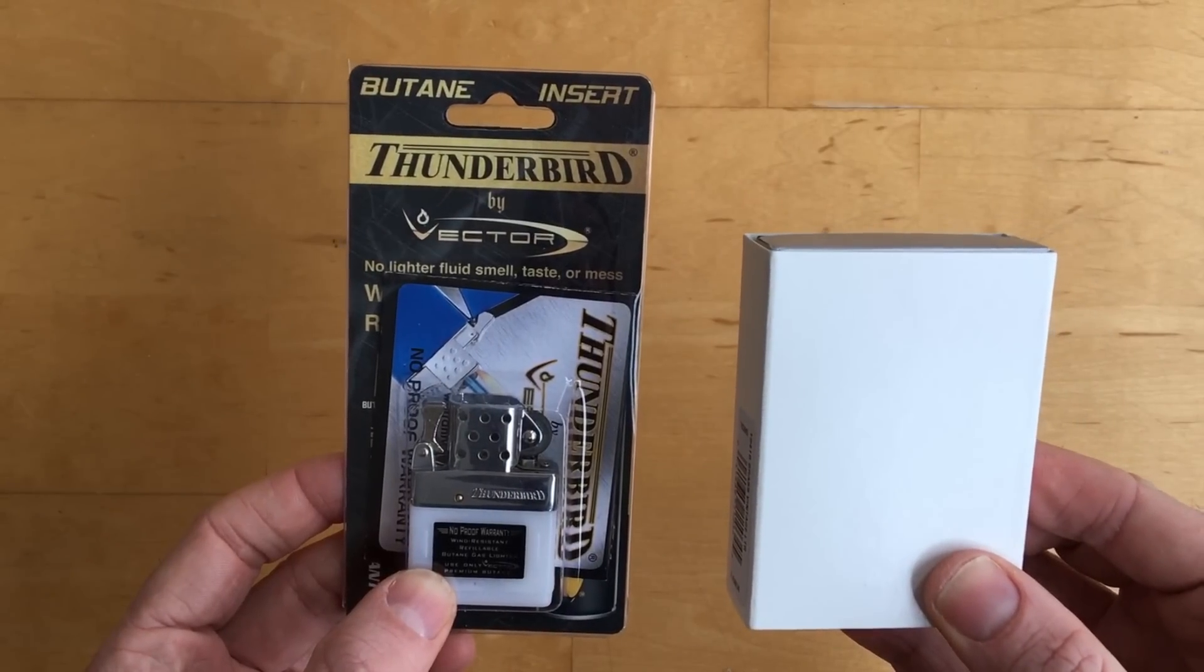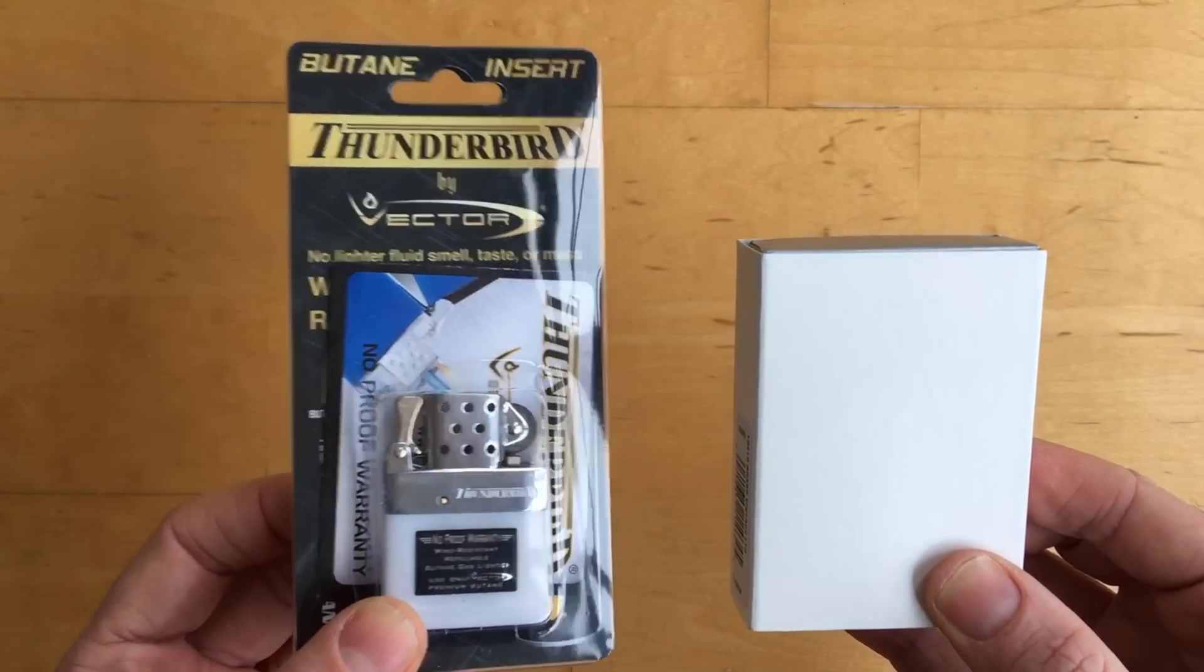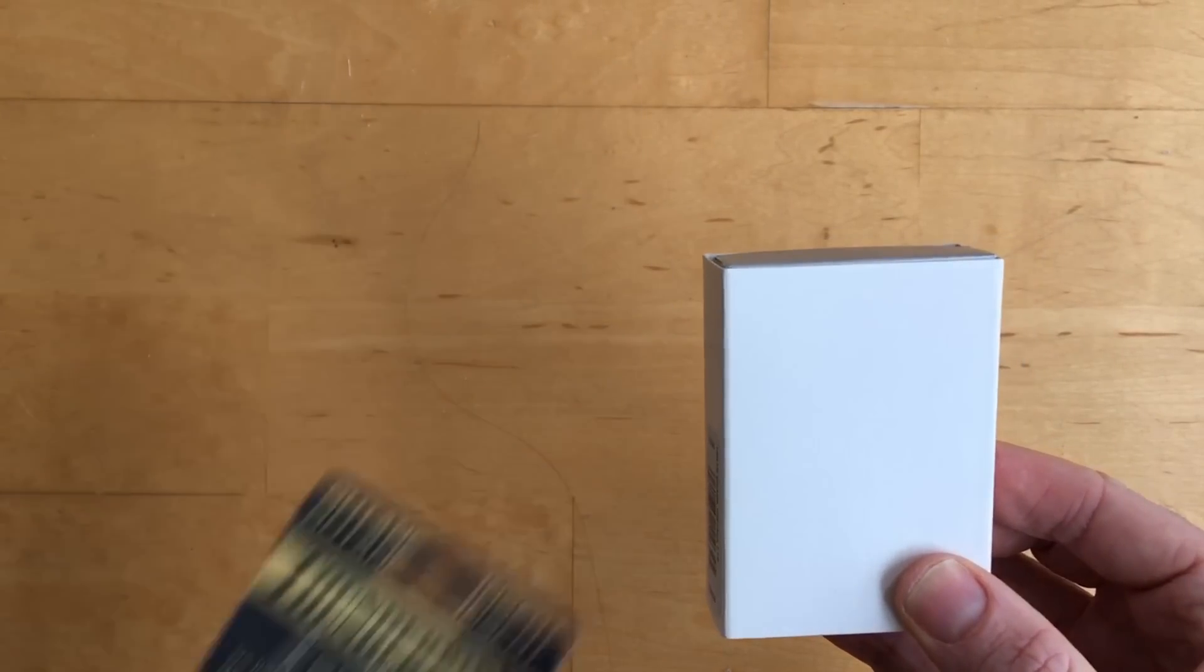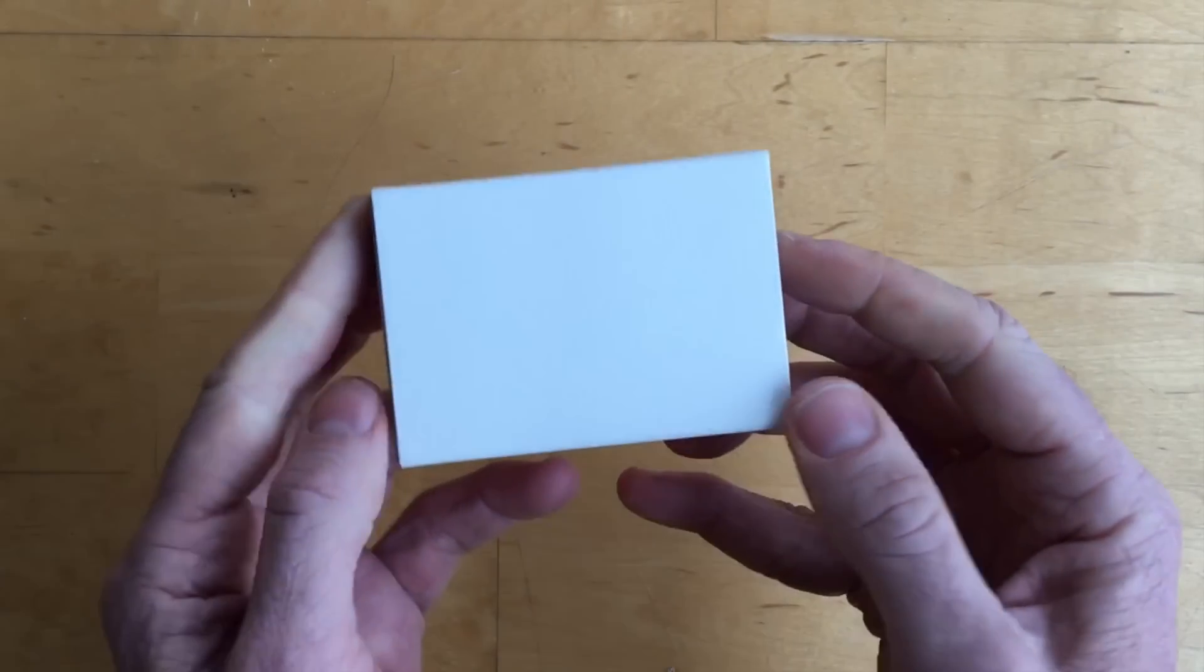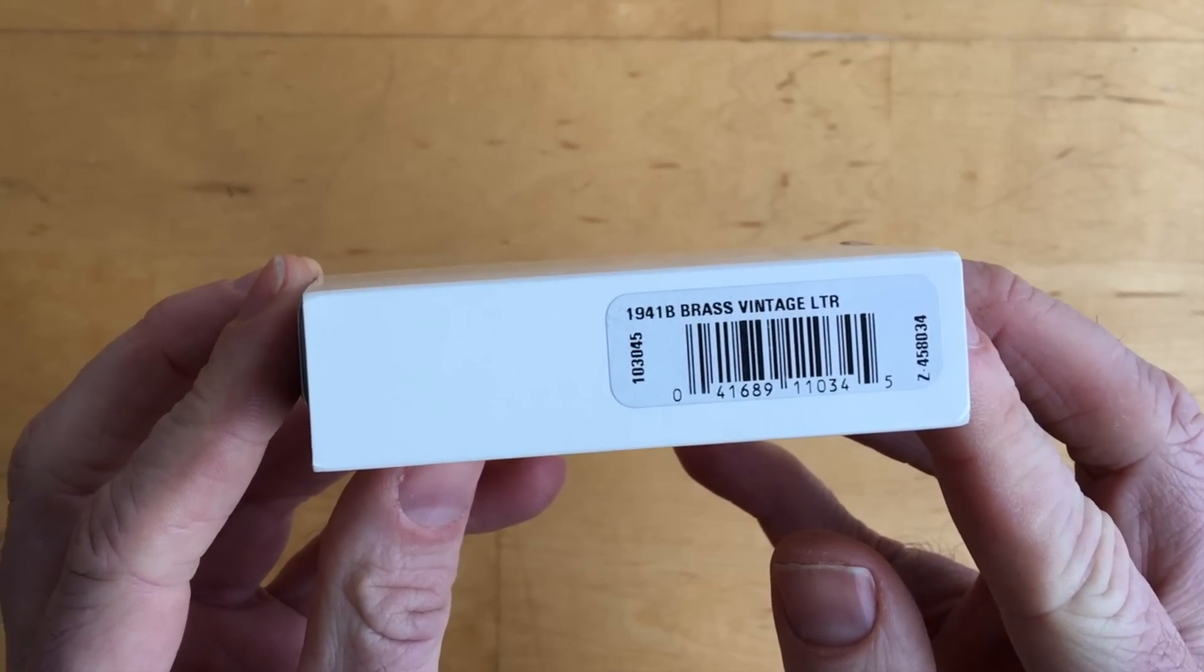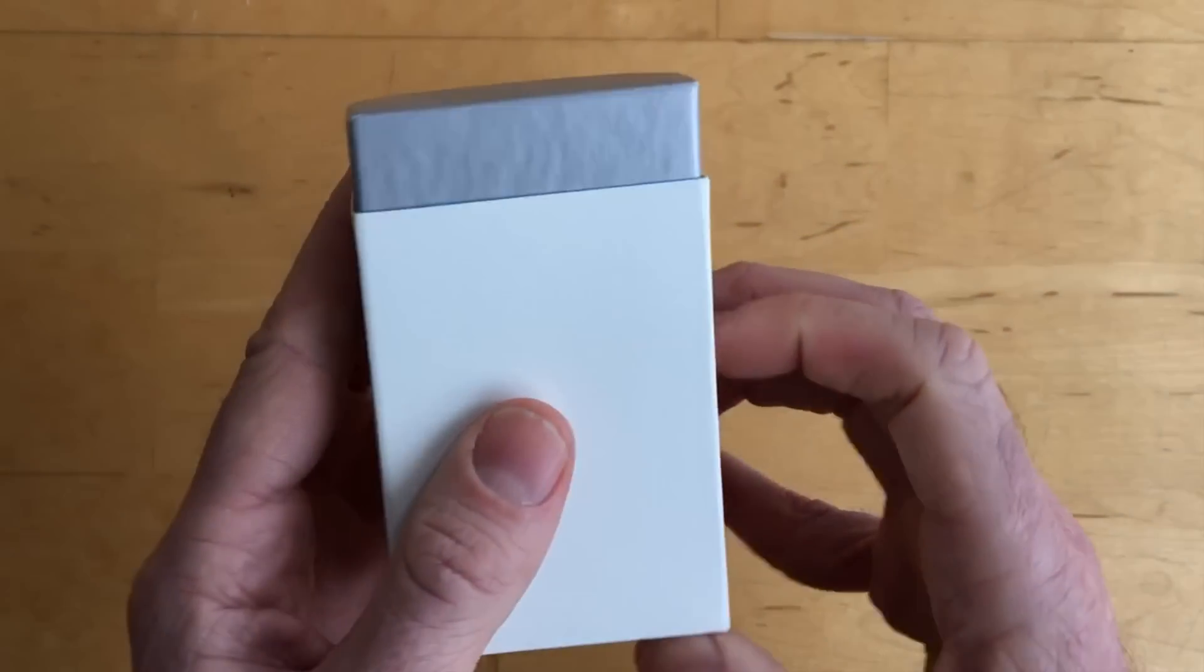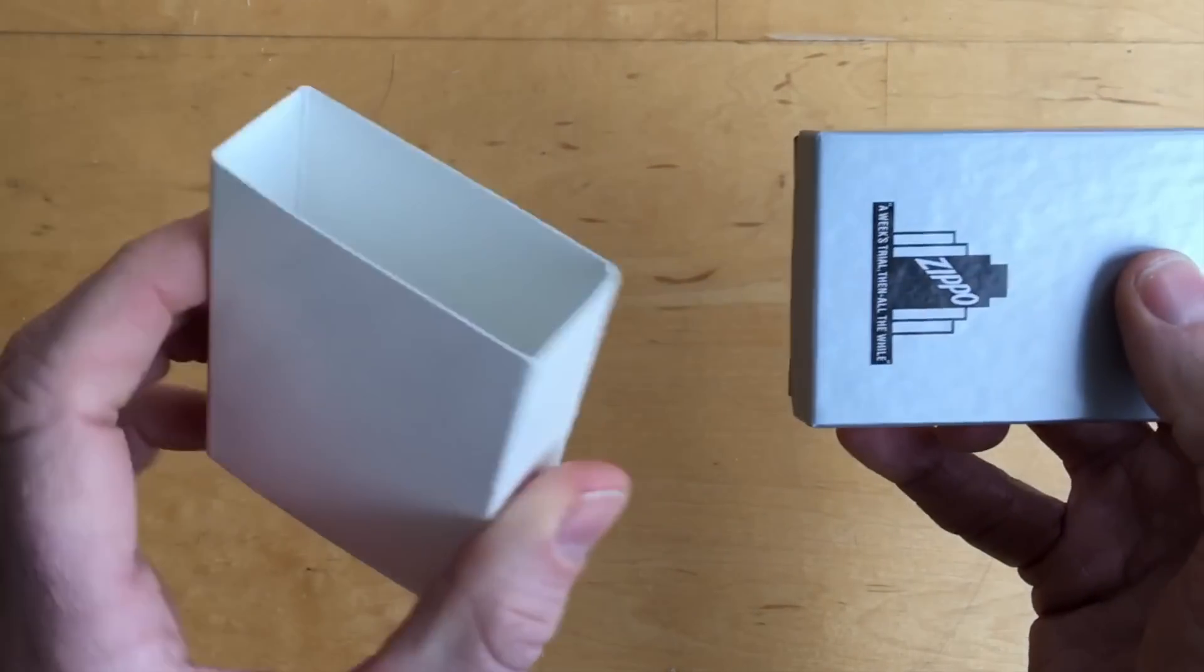Let's talk about the Zippo lighter first and then I'll talk about why I chose to go with the Vector Thunderbird insert, or more importantly a butane insert, which is what I was looking for. First and foremost, what Zippo did I get? Well, as the side sign says here, I got a 1941 brass vintage lighter. So this is a replica of a 1941 lighter that was made by Zippo.